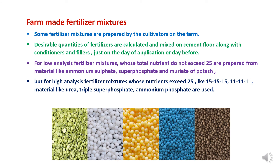The first type of mixed fertilizer is farm-made fertilizer mixtures — mixtures prepared by cultivators on the farm. Desirable quantities are calculated and mixed on a cement floor along with conditioners and fillers, just on the day of application or one day before. For low-analysis fertilizer mixtures where total nutrients do not exceed 25, materials like ammonium sulfate, superphosphate, and muriate of potash are used. For high-analysis mixtures where nutrients exceed 25 — such as NPK 15:15:15 and others — materials like urea, triple superphosphate, and ammonium phosphates are used.